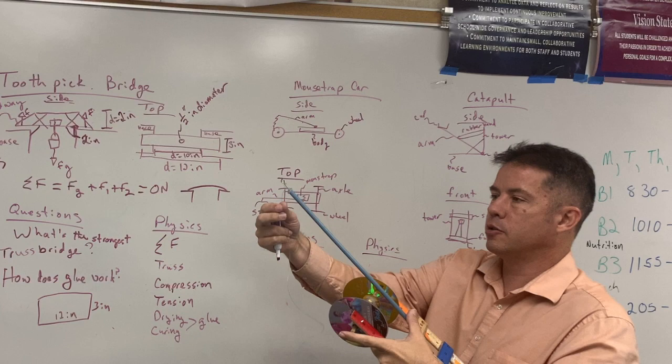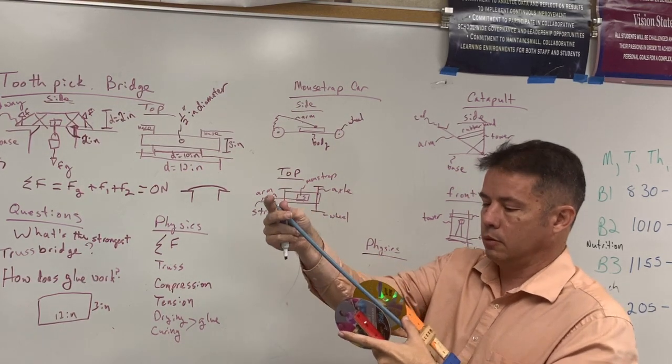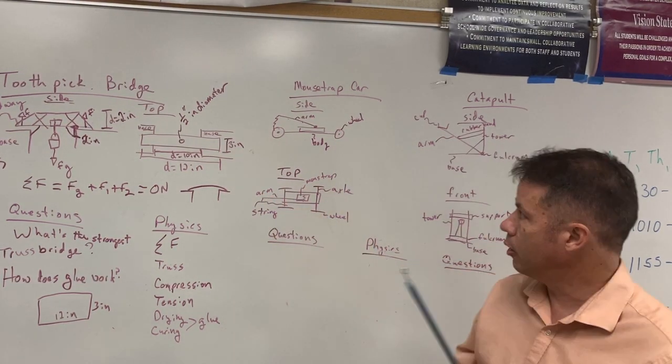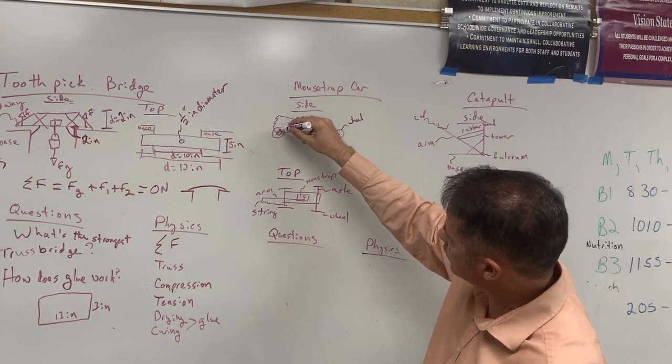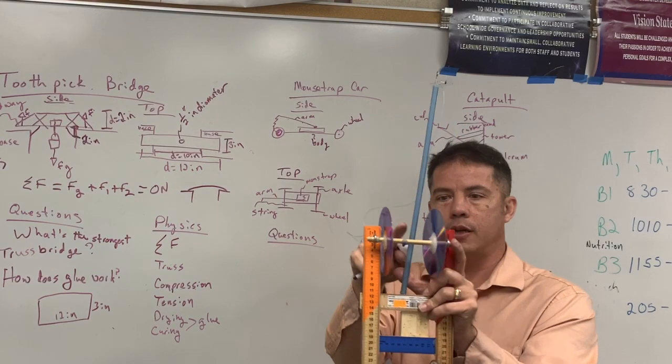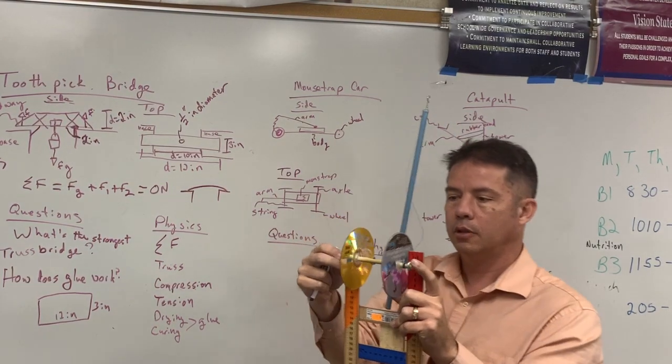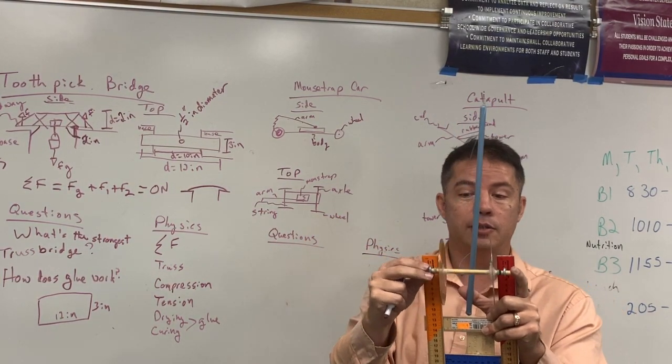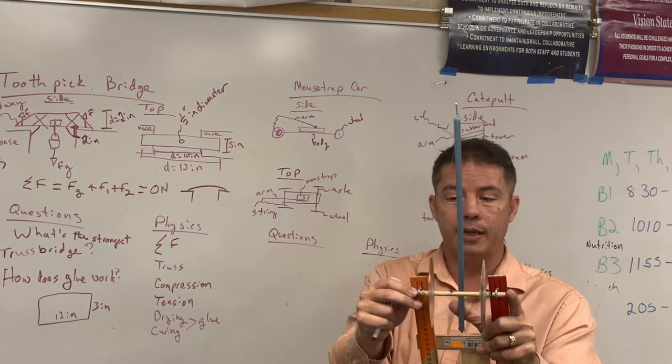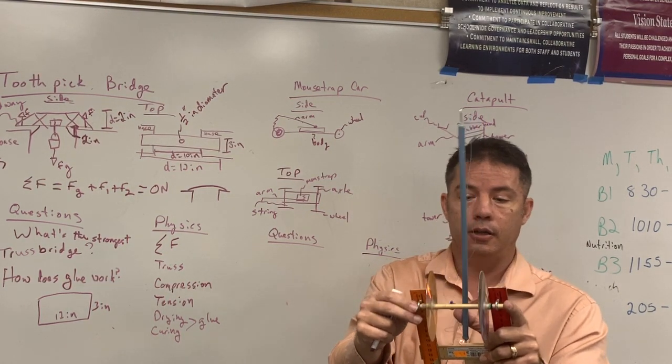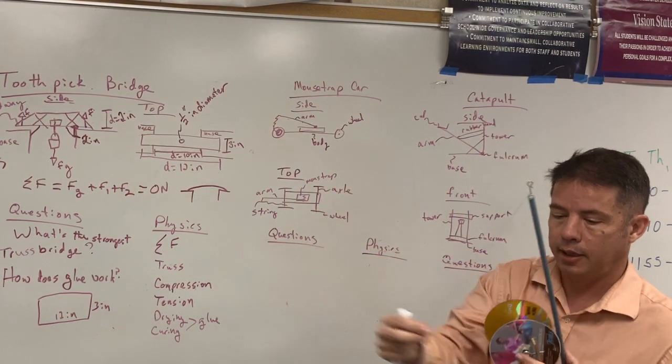and then there's going to be a string. Now, the goal of the string is to take the string, and we wind the string around the axle. So this little stick right here is called the axle. And the axle has to turn. So if you glue anything, if you glue the axle to the body, and it doesn't turn, then it's not going to work. So the axle has to turn,